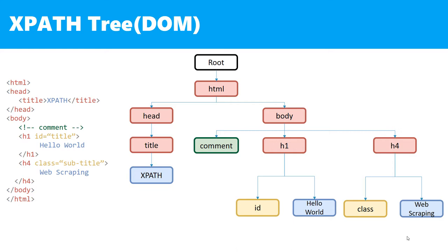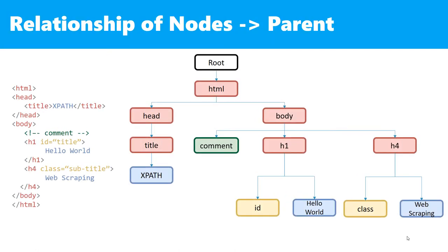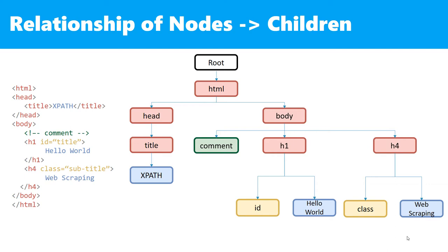The only node that is not part of the HTML document is the root node. Because we are dealing with a tree, there will be relationships between nodes. I want you to understand and memorize all of them, because they are the key to writing valid XPath expressions. The first relationship is called parent. For example, the body node is the parent of the comment node, the h1 node, and the h4 node. Then we have the children relationship — the comment node, the h1 node, and the h4 node are all children of the body node.